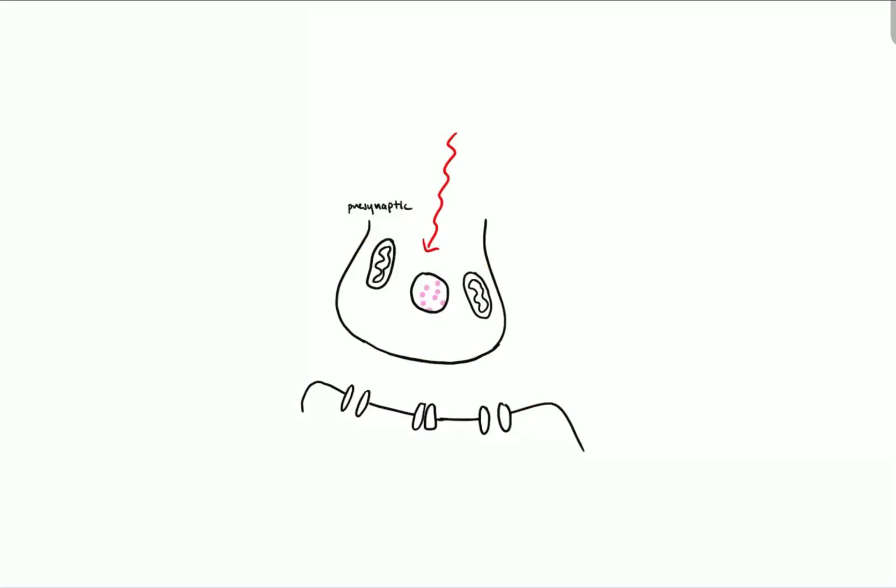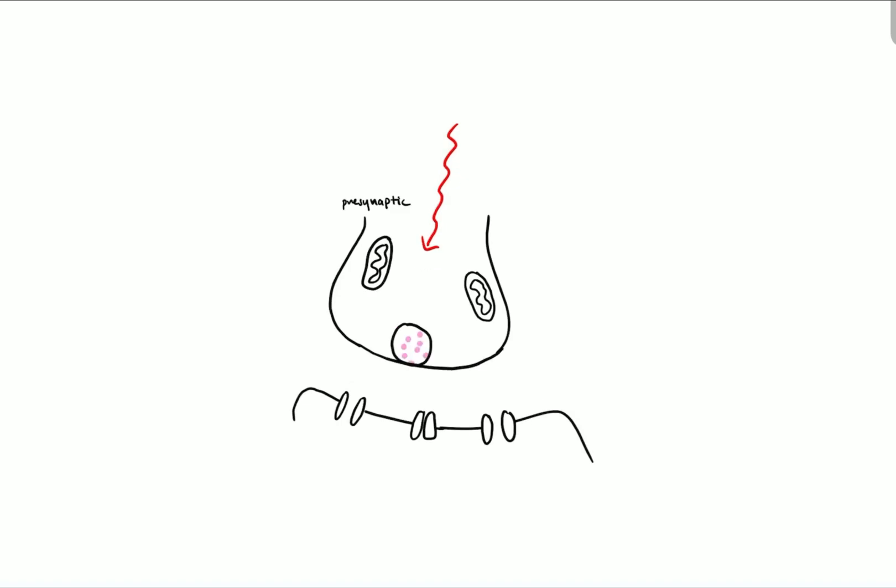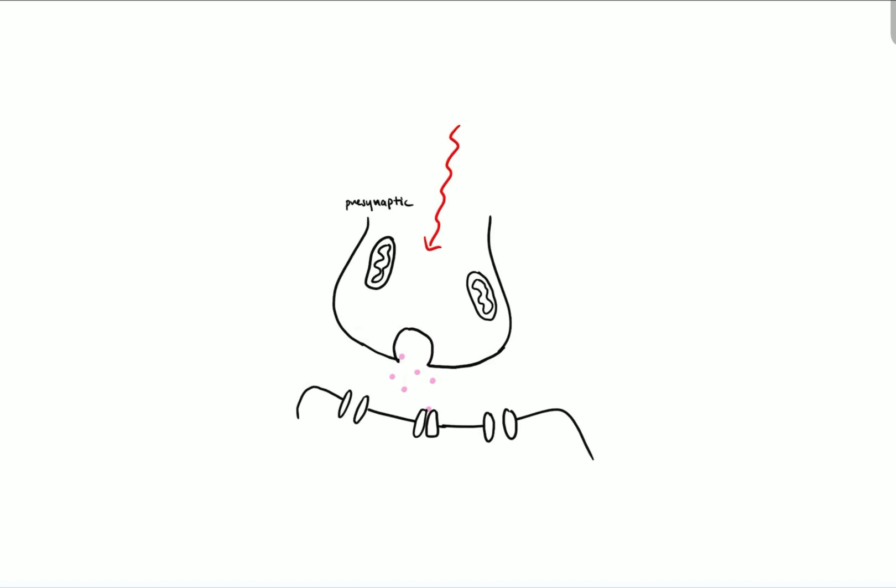To take a more in-depth look, when an impulse arrives at the end of the presynaptic neuron, the vesicle moves towards and fuses with the presynaptic membrane. This releases neurotransmitters into the synaptic cleft, which diffuse down the concentration gradient.